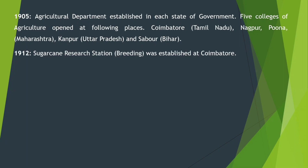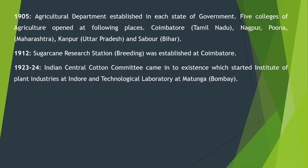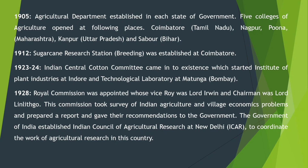In 1912, a sugarcane research station was established at Coimbatore for breeding. In 1923-24, Indian Central Cotton Committee came into existence, which started the Institute of Plant Industry at Indore and a Technological Laboratory at Matunga, Bombay. In 1928, Royal Commission was appointed — Vice-Roy was Lord Irwin and Chairman was Lord Lytithgow — जिन्होंने Indian agriculture का survey किया, villages में economic problems देखे, report बनाया और government को recommend किया। The Government of India then established Indian Council of Agricultural Research (ICAR), New Delhi, to coordinate the work of agricultural research, जो कि पहले IARI था बट अब ICAR बना दिया गया।